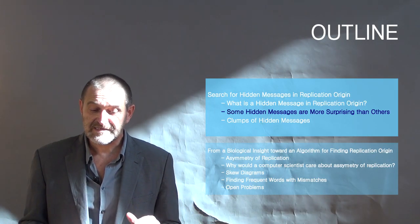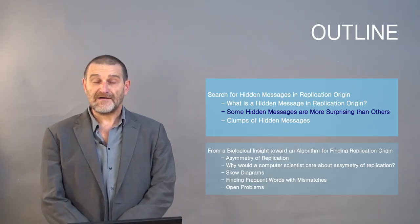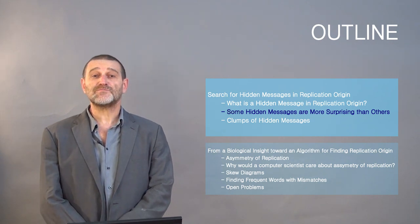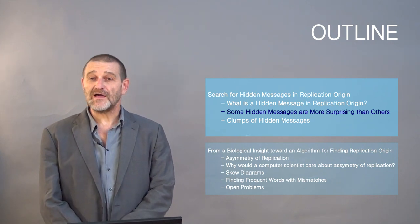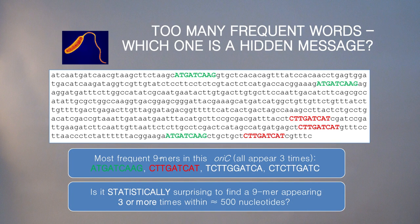Now we turn to the next topic, which will reveal that some hidden messages are more surprising than others. After we implemented the frequent words problem, let's apply it to real genomes. Let's start from the replication of origin in the bacterium Vibrio cholerae. When we run our algorithm, it turns out there are too many potential replication origins.